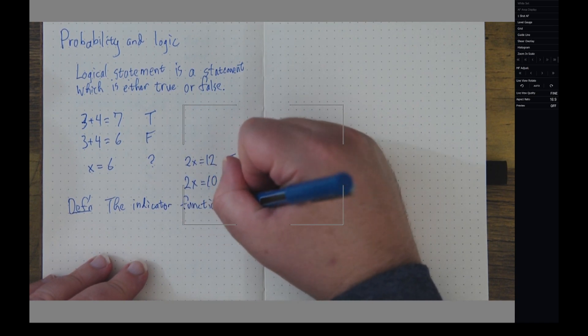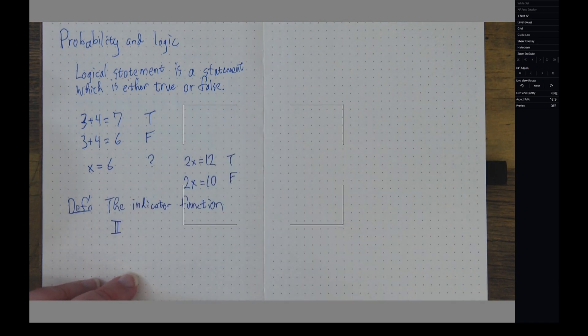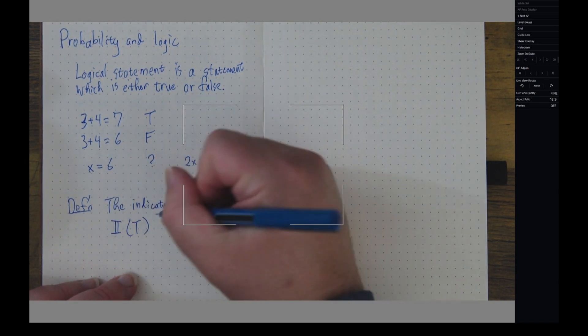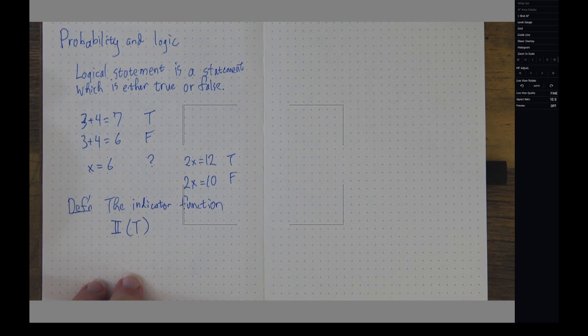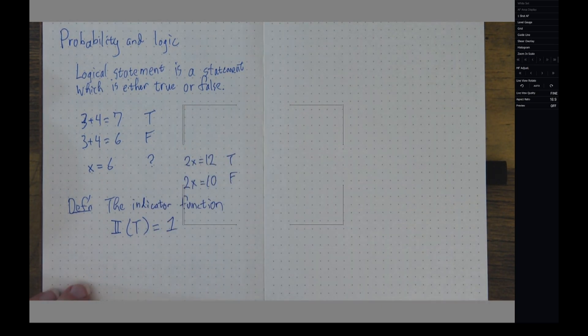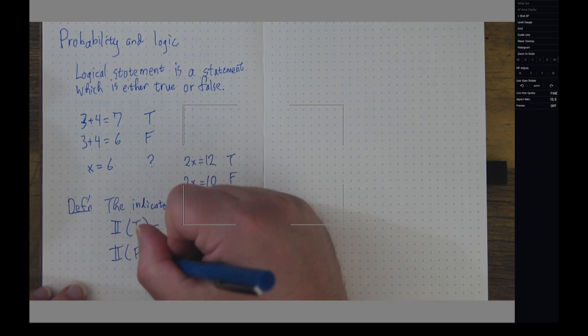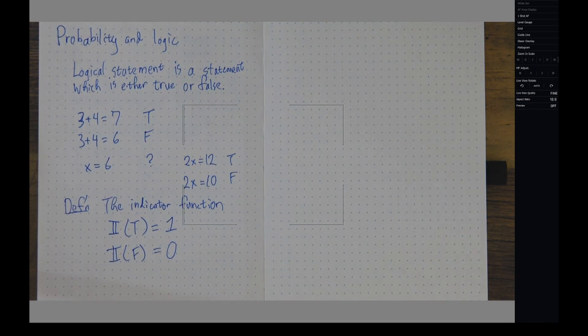And for the indicator function, I'm going to use a blackboard boldface I, capital I. And if I feed as input to that indicator function a true statement, then I'm going to return the number 1. If I feed to that indicator function a false statement, then I'm going to return the number 0.